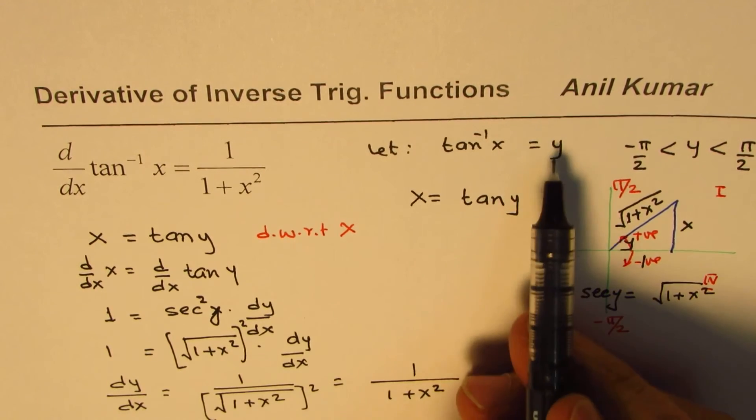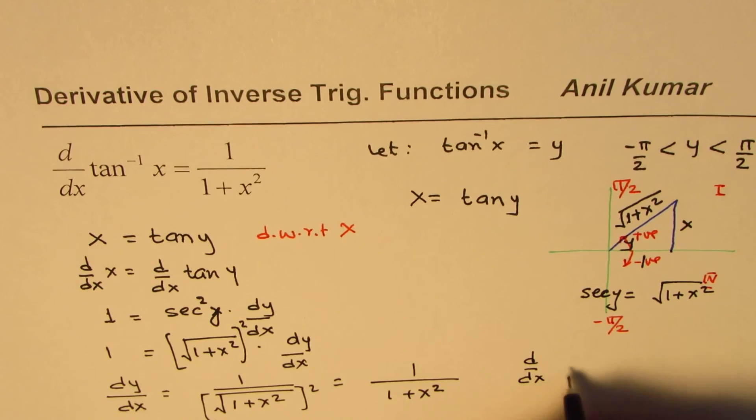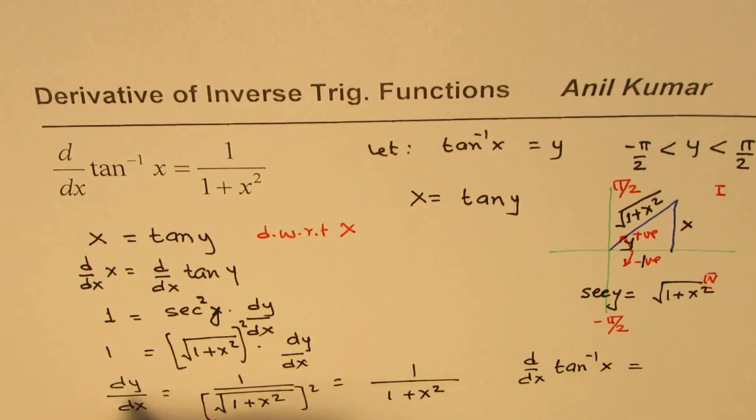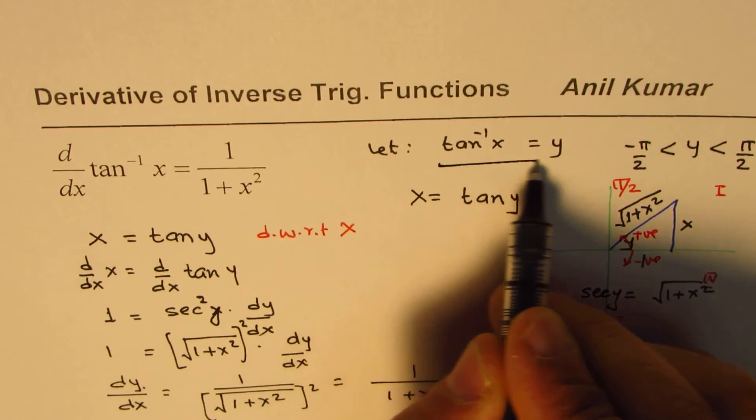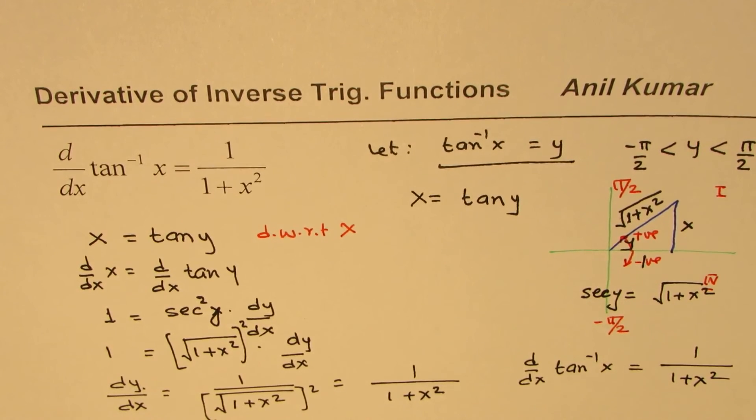y for us is tan inverse x, so I could write this in that form, that is to say, d/dx of tan inverse x, since y equals tan inverse x, equals 1 over 1 plus x square. That is how you can prove.